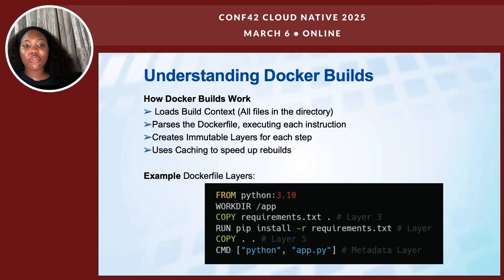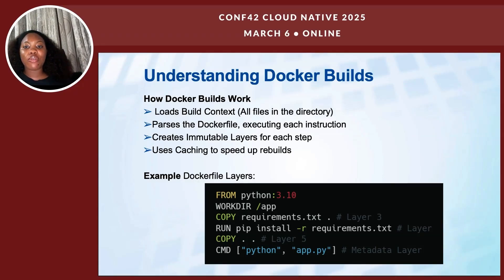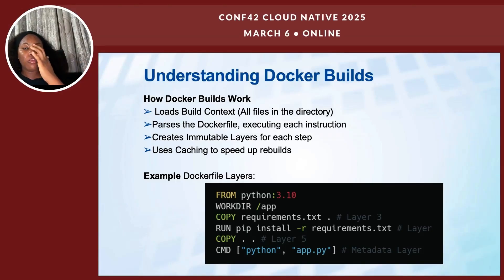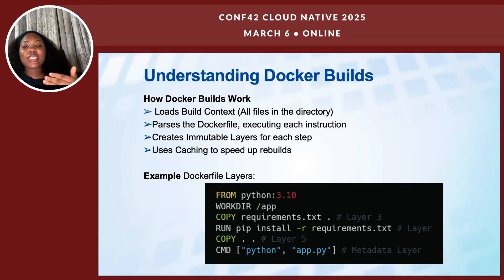Here is an example of a Dockerfile. The first instruction is from Python 3.10 — that's the base image. You could also use an Alpine variant. Then it copies the content from the requirements.txt file first. This is a Python project, and it installs the dependencies. This step can be cached if requirements.txt doesn't change — if you don't add any new packages, it doesn't reinstall dependencies. Then it copies the rest of the application files and defines the command to run the application.